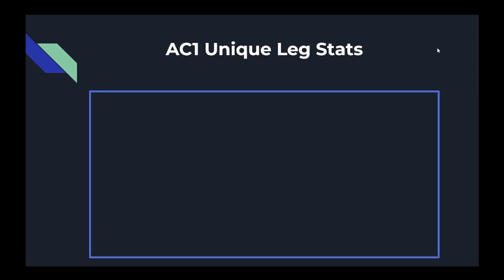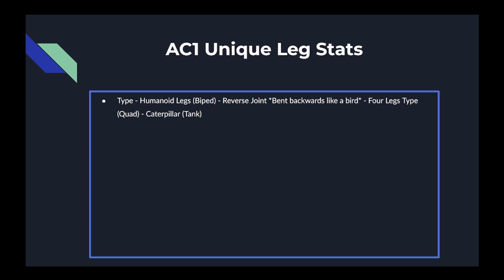We are skipping unique arm stats because the arm in this game does not have any unique stats, but it does affect aiming and other things later which will be brought up at that time. Moving on to legs — the first stat is what type of legs they are. Reverse joint legs are bent backward like a bird and have highly increased jump height; while not as fast as bipeds, they have lower energy cost on average, making it easier to spend time in the air, and in later games have reduced recoil from cannons. Then there are also the four-legged type, which the community calls a quad, and the caterpillar leg type which people refer to as a tank.